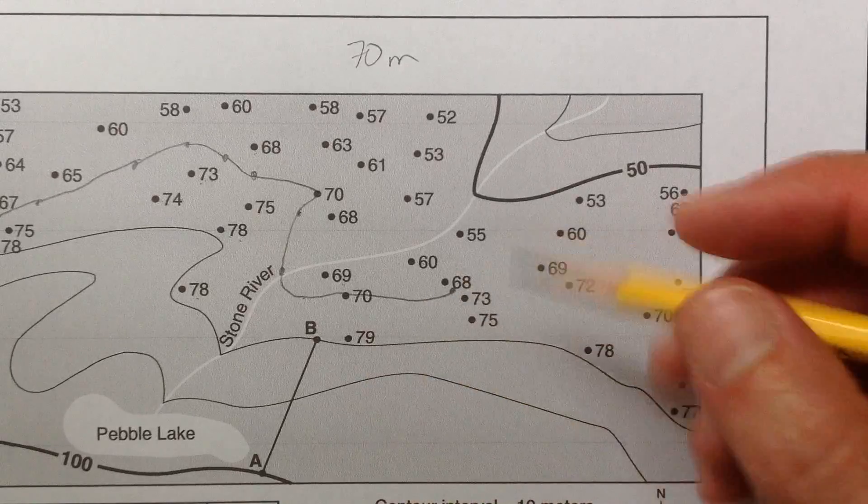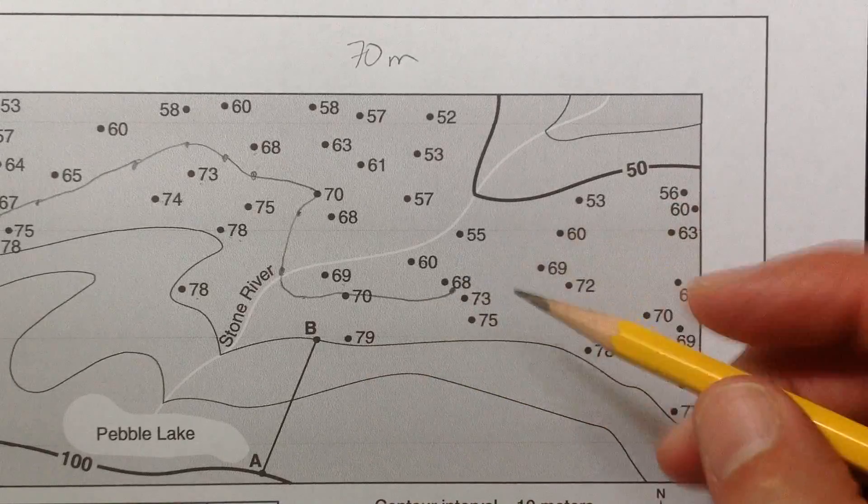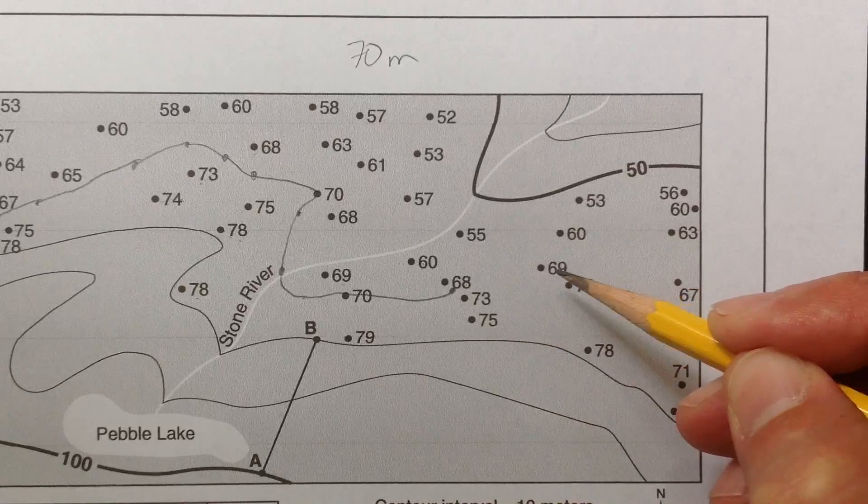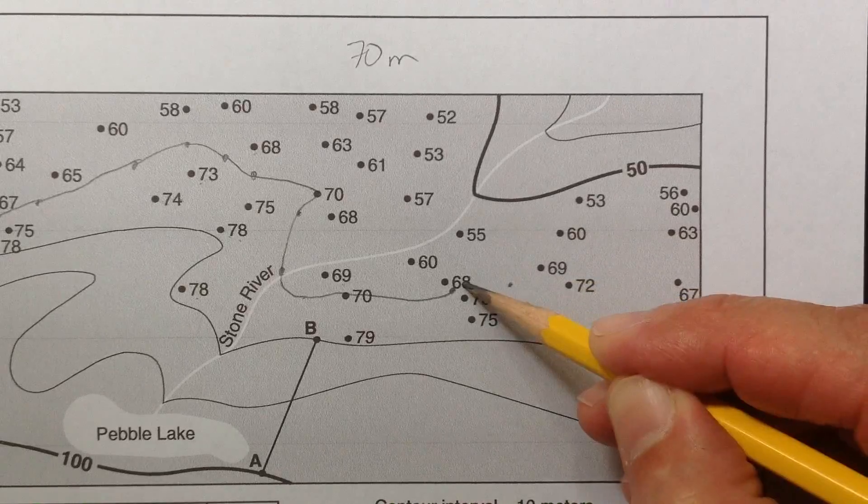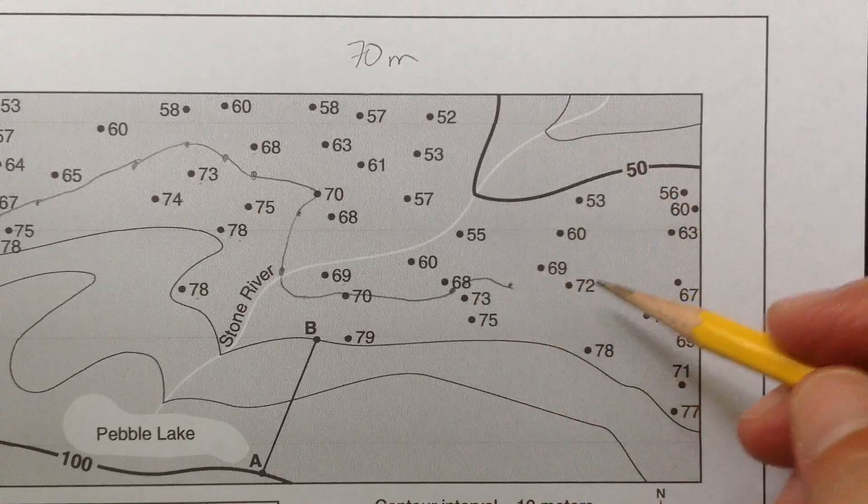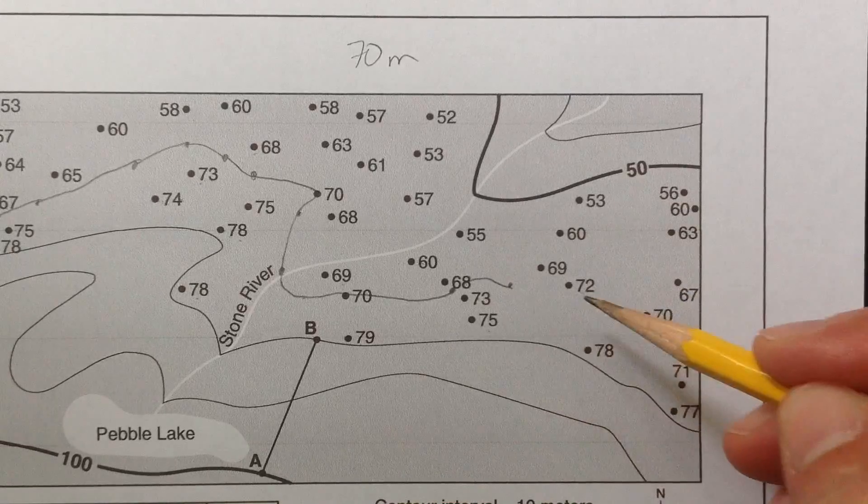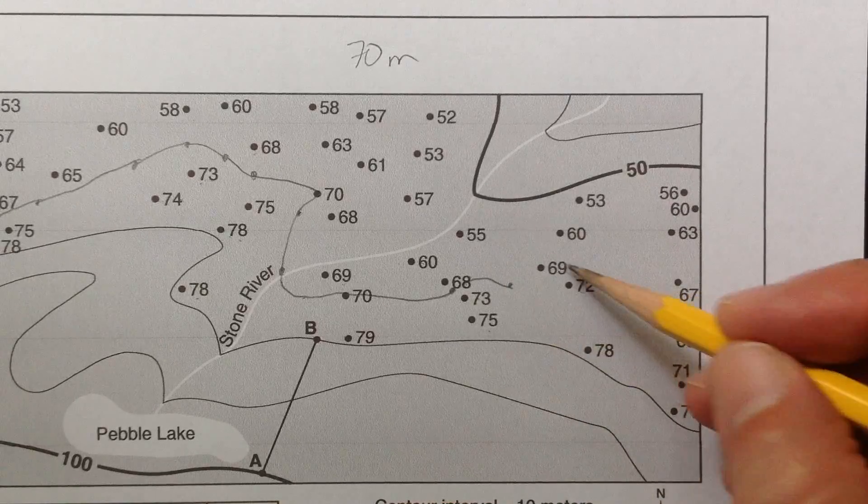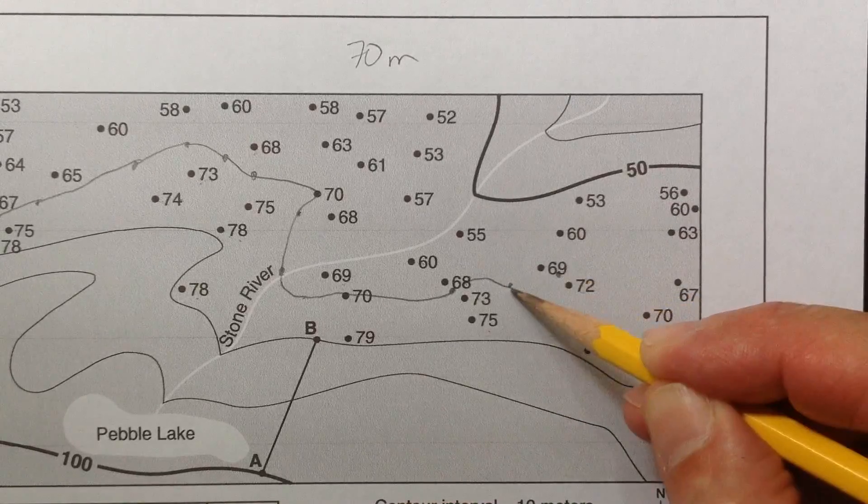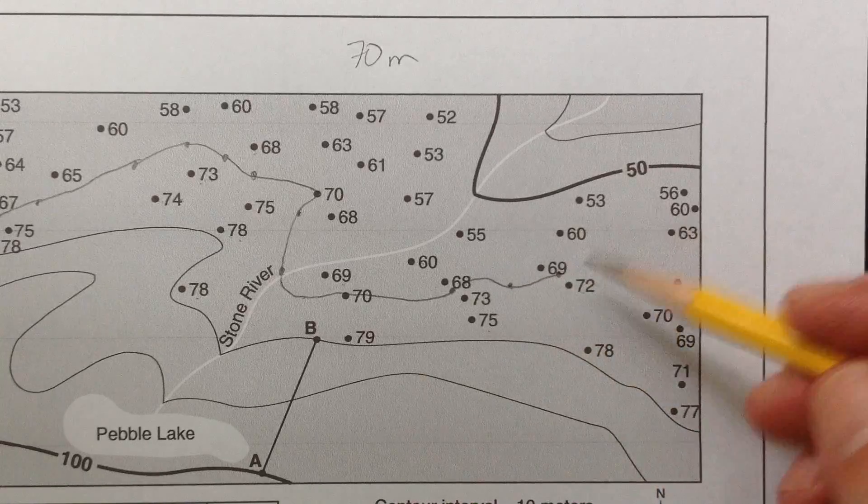But you can get real close. Your lines can get real close. That happens. It's not a problem. Don't worry about it. And then I'm here, and 70 is between 69 and 73. I'm right there. Where's the next 70? Is it between 75 and 70? No, that's too high. But it is between 69 and 72, so I'm going to kind of squeeze it in right there.